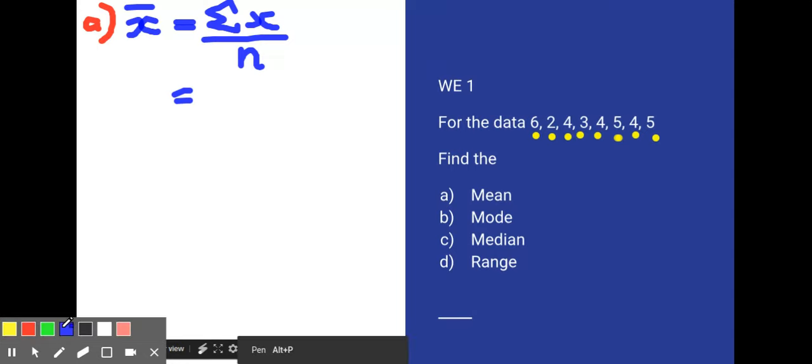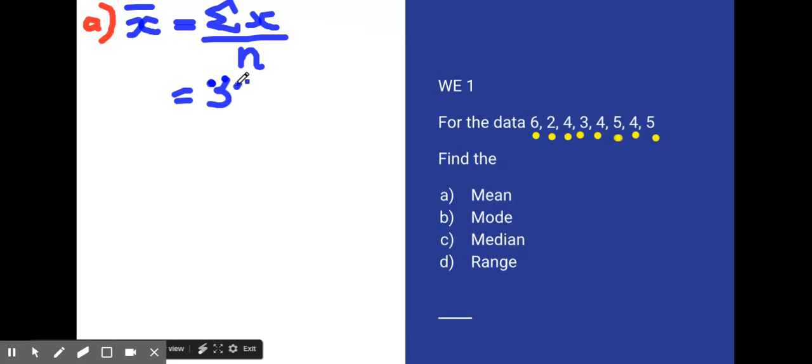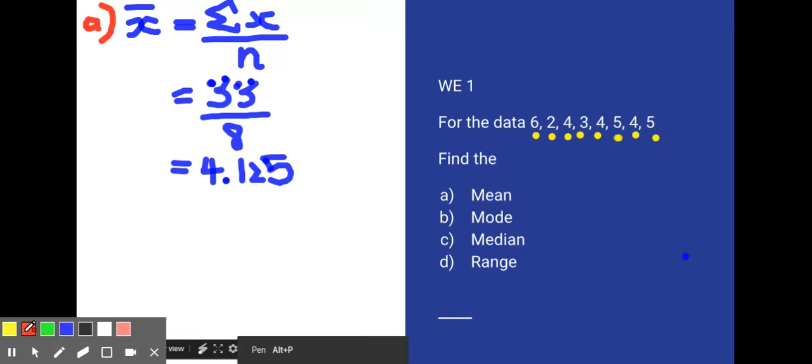I've got 33, and I have 8 numbers. 33 divided by 8, which I'd prefer as a decimal, is 4.125. So my mean is 4.125. Now, my mode is always the most common result.